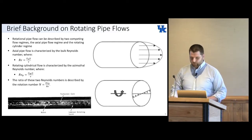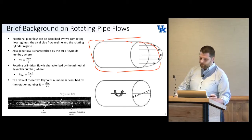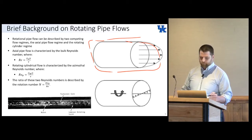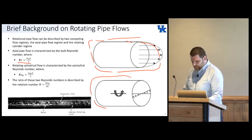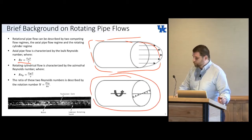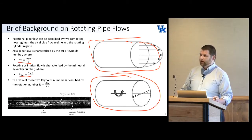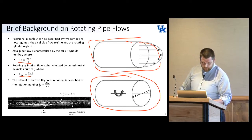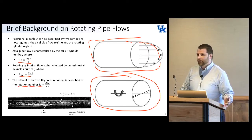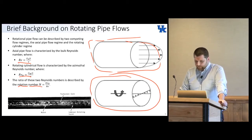We can break down this flow into two basic regimes. One is your typical pipe flow, characterized by the bulk Reynolds number based on the bulk velocity. The other is a purely rotational cylindrical flow based on the azimuthal Reynolds number determined by the wall velocity. If we take a ratio of these two numbers we get the rotation number N, which is highly important to us in categorizing these flows and understanding the competition between these two regimes.